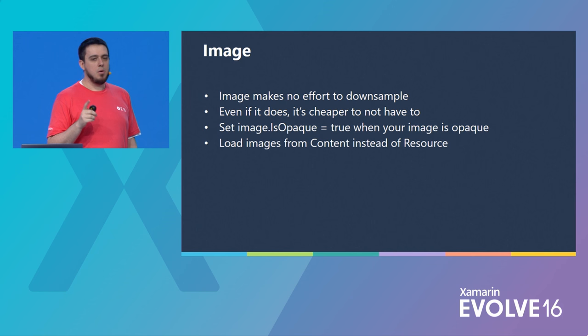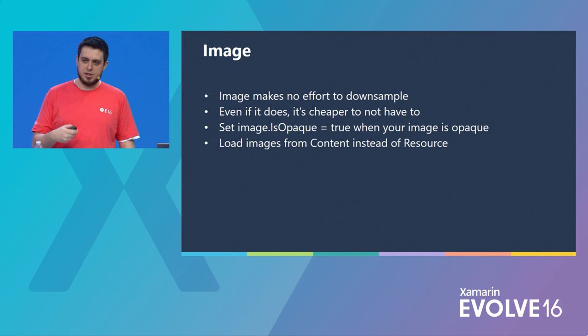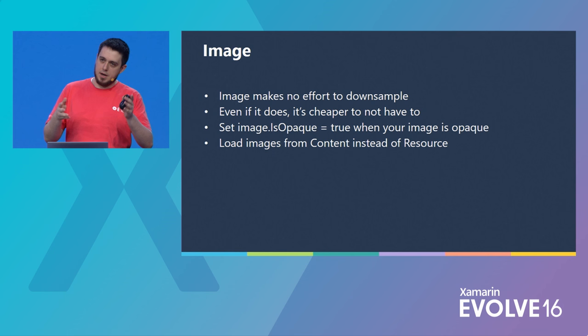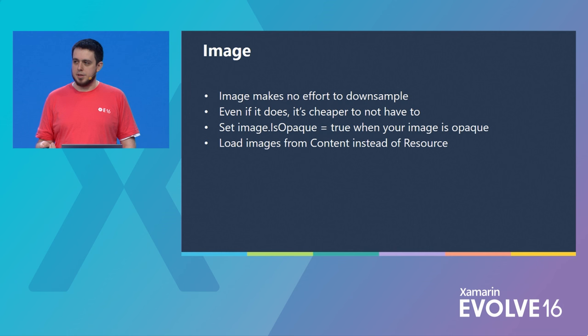On Android, images don't down-sample — that's just the nature of Android images in Xamarin.Forms, a current limitation. It's up to you to do the down-sampling on your server or before you ship them with the device. Android has a performance cliff with image size — it's fine, fine, fine, and then two frames a second. There is an image-is-opaque property: if your image is not transparent, set that to true. And you should load your images from content rather than from resources because the load time is slightly faster.